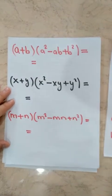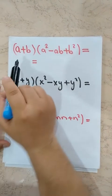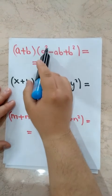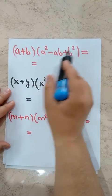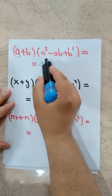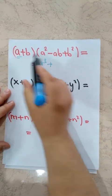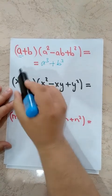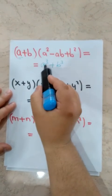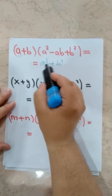Let's go on. We have some examples here. A plus B times A squared minus AB plus B squared: our first term is A, so A cubed, and second term is B, so B cubed. This factored form is equal to A cubed plus B cubed — the sum of two cubes.